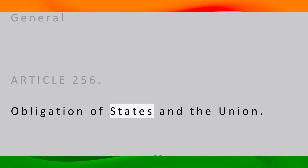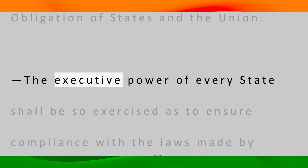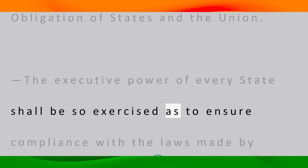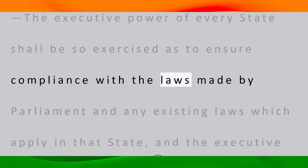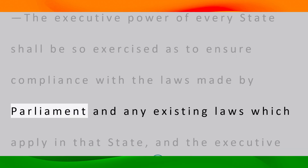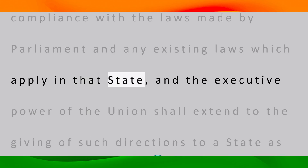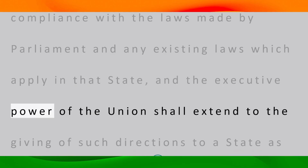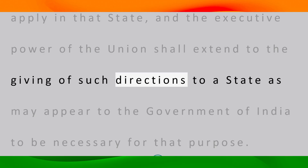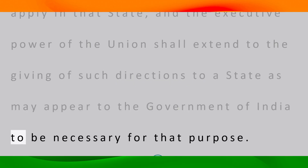Obligation of states and the union: The executive power of every state shall be so exercised as to ensure compliance with the laws made by parliament and any existing laws which apply in that state; and the executive power of the union shall extend to the giving of such directions to a state as may appear to the government of India to be necessary for that purpose.